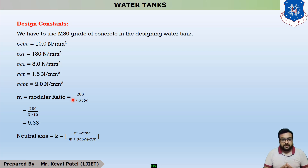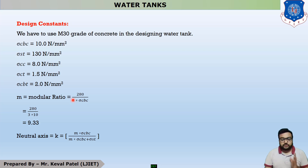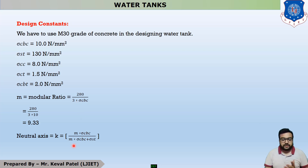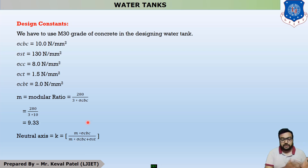After that, we find out the second important design constant which is the neutral axis, denoted by small k. The equation of small k is m times sigma CBC divided by m times sigma CBC plus sigma ST. This concludes the last lecture's revision.